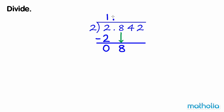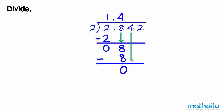8 tenths divide 2 equals 4 tenths. 8 tenths subtract 8 tenths equals 0. Bring down the hundredths.